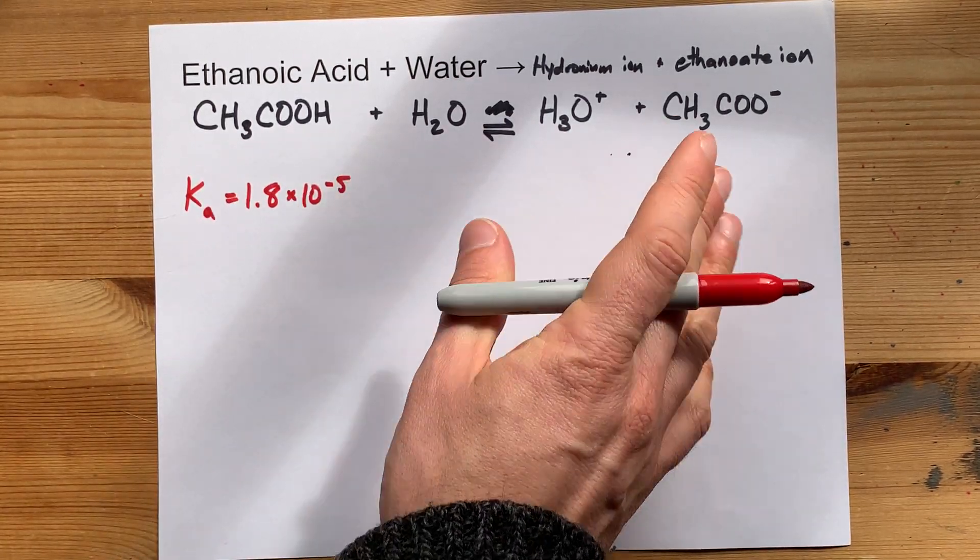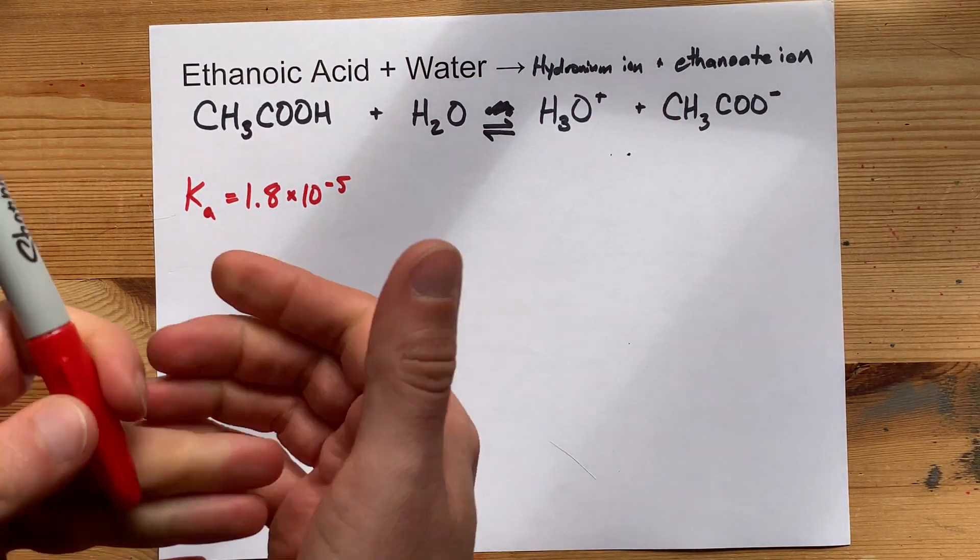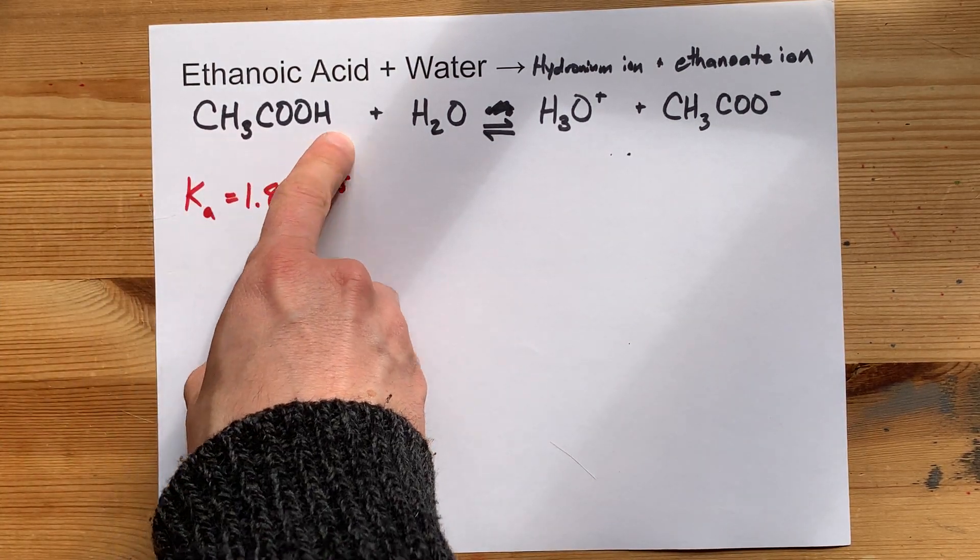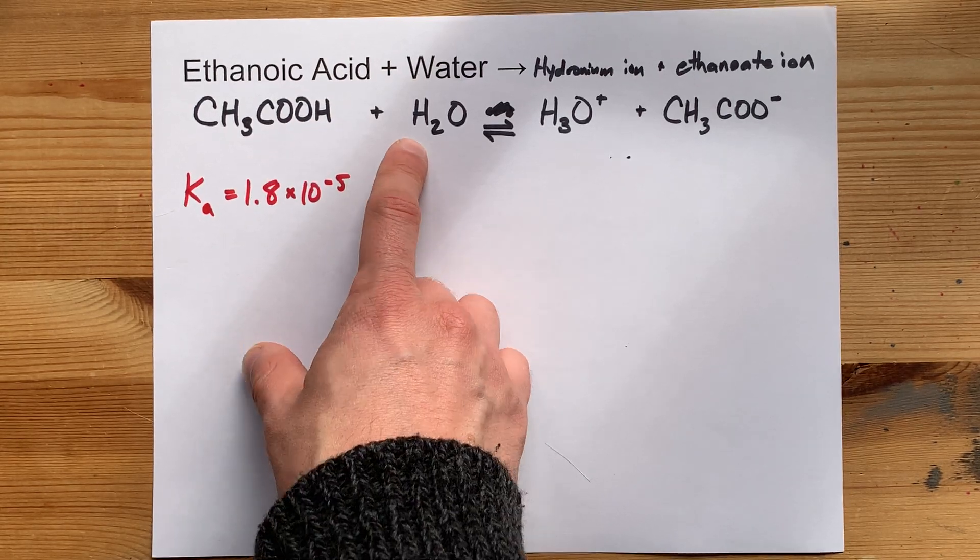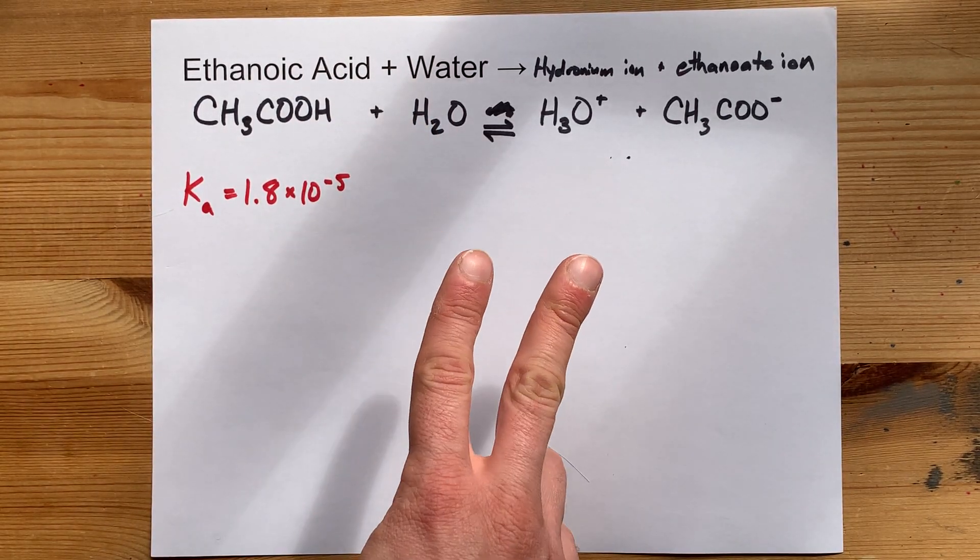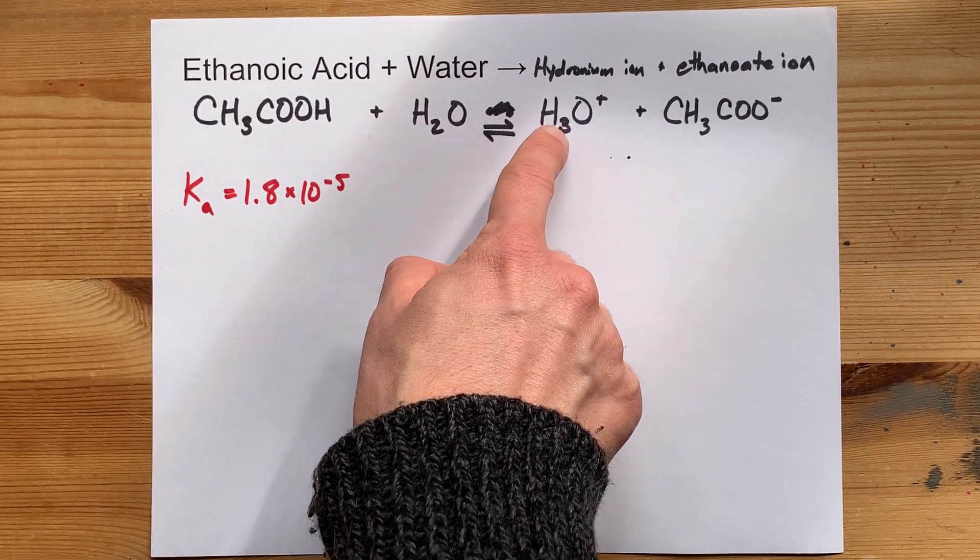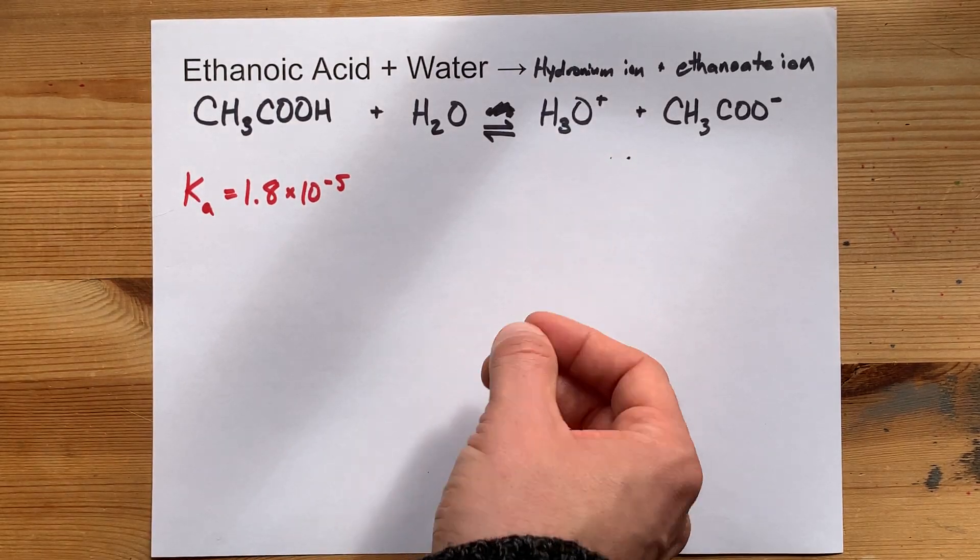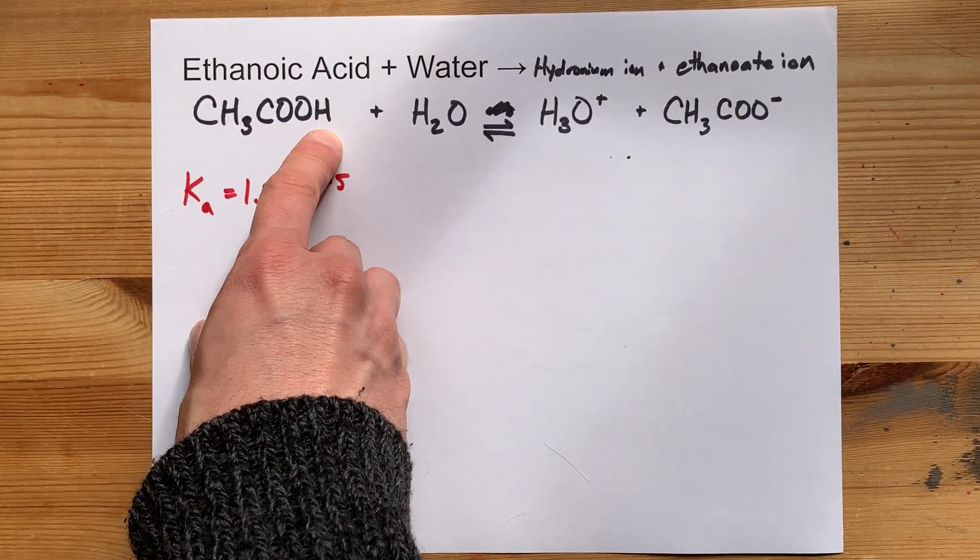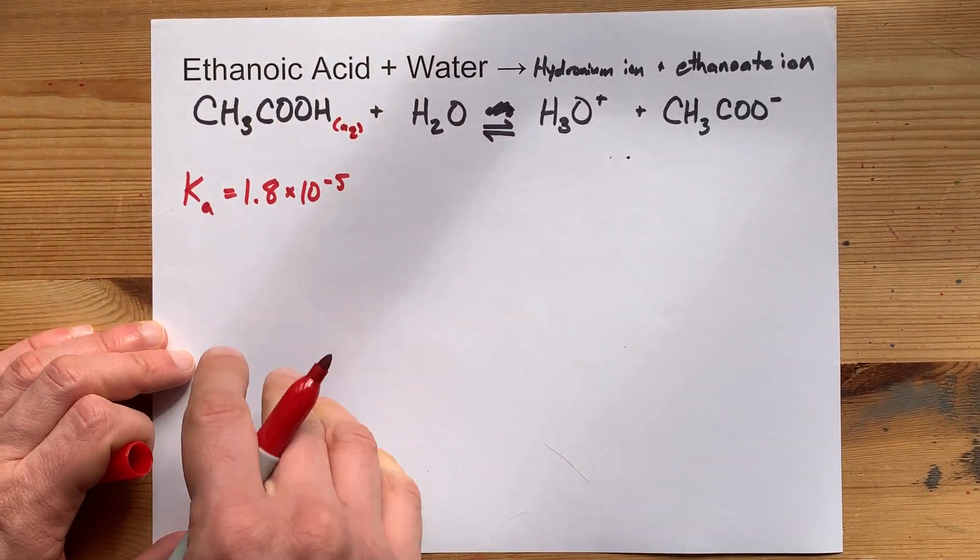And this reaction goes like 1 to 2% completion only. So for every 100 molecules of this that you dissolve in water, 1 or 2 of those 100 will give their Hs away to water, produce that H3O+ that makes the water acidic, and the rest actually stay in solution as the whole molecule.